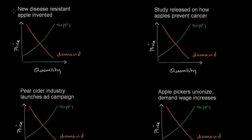And then all of a sudden this thing happens: a new disease-resistant apple is invented. What's likely to happen for the next period? Well, a new disease-resistant apple being invented clearly impacts the growers, clearly impacts the suppliers. All of a sudden they'll have fewer apples succumbing to disease, so they will be able to produce more apples. So at any given price point, this will shift the quantity supplied up — the entire supply curve shifts to the right. Supply goes up.